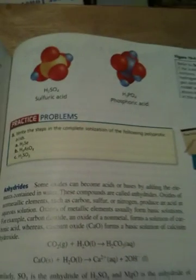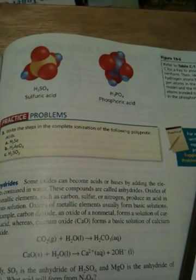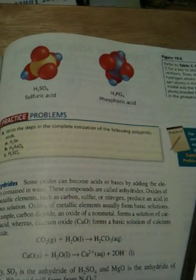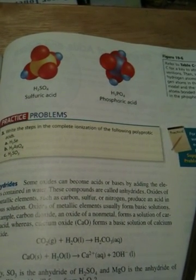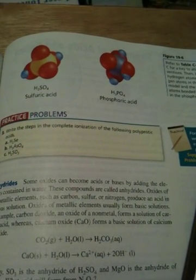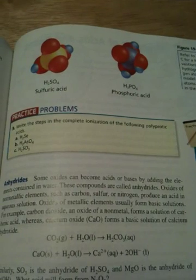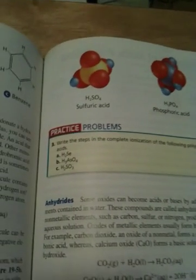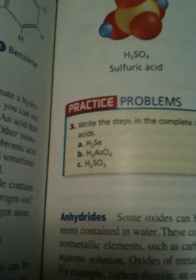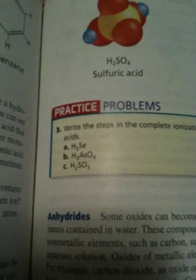they first of all state in the question that what they want you to do is write the steps in the complete, notice that word complete, ionization of the following polyprotic acids. A polyprotic acid has more than one hydrogen to give, and as I zero in on these guys, you can see all of them have several hydrogens